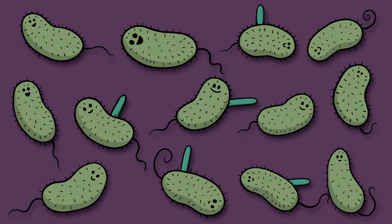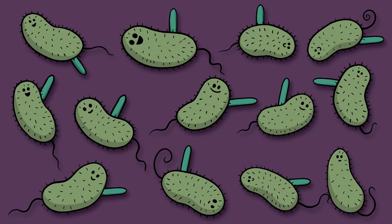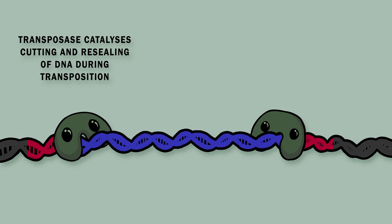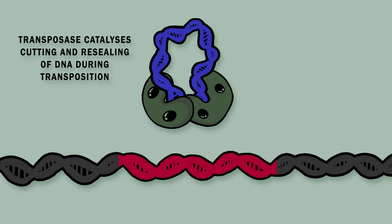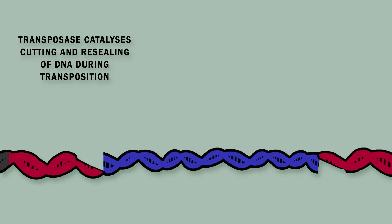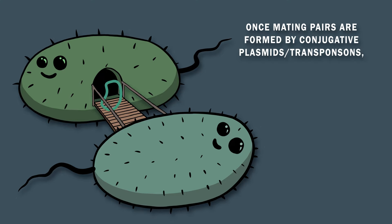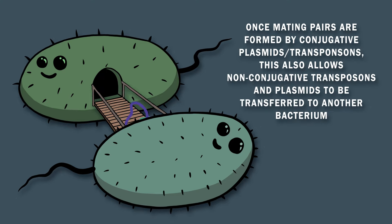Note that in a population of bacteria in which some have a conjugative plasmid and others do not, eventually all cells will acquire a conjugative plasmid. The enzyme transposase catalyzes cutting and resealing of DNA during transposition. Once mating pairs are formed by conjugative plasmids or transposons, this also allows non-conjugative transposons and plasmids to be transferred to another bacterium.